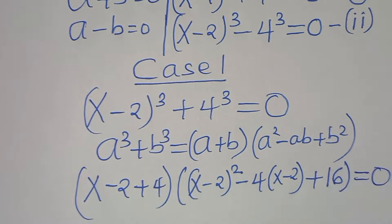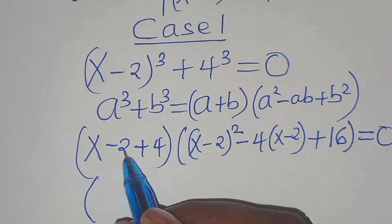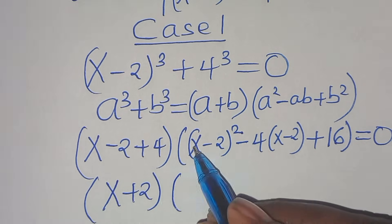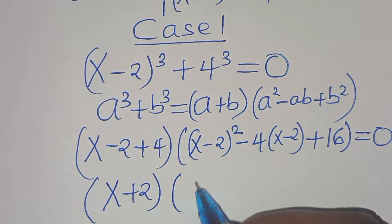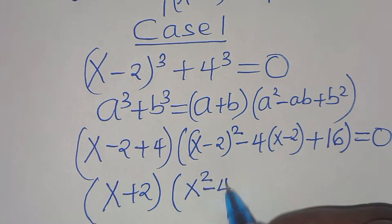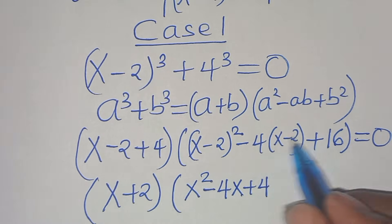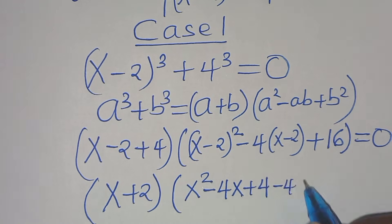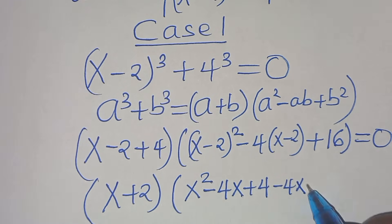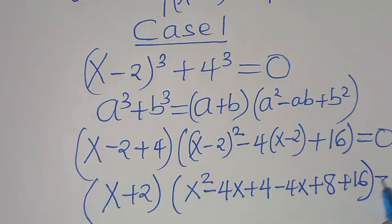This is equal to 0. So here we have x minus 2 plus 4, which is x plus 2. Then expanding x minus 2 to the power of 2: this is x squared minus 4x plus 4. Then opening the parentheses: minus 4 times x is minus 4x, minus 4 times minus 2 is plus 8. Then plus 16. This is equal to 0.